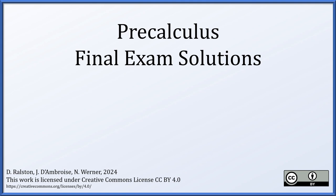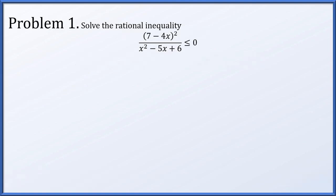What follows is a sample final exam for the course and we're going to work through solving every problem without using a calculator at any step. Problem one: solve the following rational inequality — 7 minus 4x squared over x squared minus 5x plus 6 is less than or equal to zero.